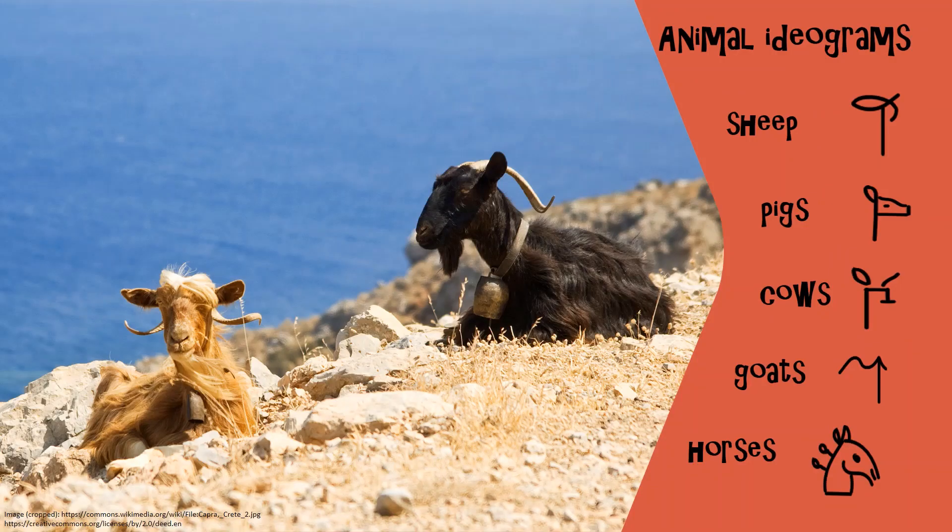As well as having signs that could be used to spell out words and names, Linear B had some signs that we call ideograms, which were used to represent a whole concept. For example, there were several ideograms that were used for different kinds of animals. Here you can see the ideograms for sheep, pigs, cows, goats and horses. These would often appear with a numeral next to them so that you could see how many of this type of animal a person had. You can see that these ideograms are based on little pictures of the animals that they're meant to be. Which one do you think looks closest to its animal?